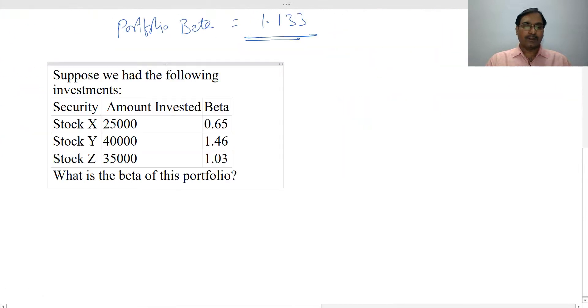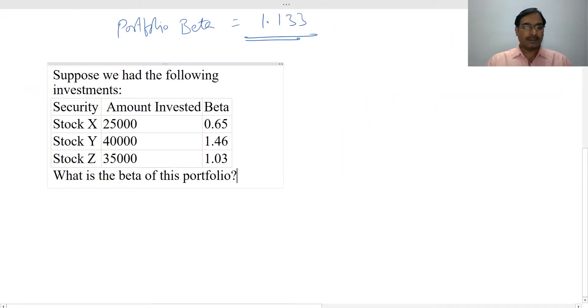I will take another example. So in this case, if you look, the amount invested is given. Weights are not given. So first what you need to do is you need to calculate the weights. To get your weights, first sum the total amount that you invested. So this comes to 25, 40, 35. So 1,00,000 is the total amount invested.